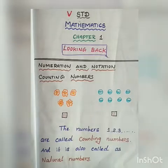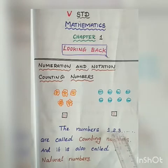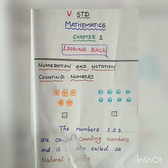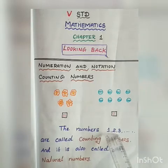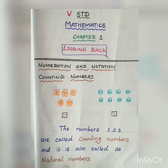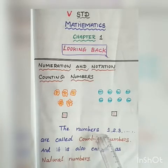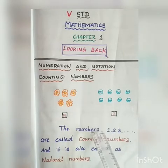Whenever you want to count some objects or anything, you start with the number 1, 2, 3 and it will go on up to however many objects you have. So the numbers 1, 2, 3 and going on are called counting numbers. They are also called natural numbers. Counting numbers and natural numbers are the same, and they start with 1.